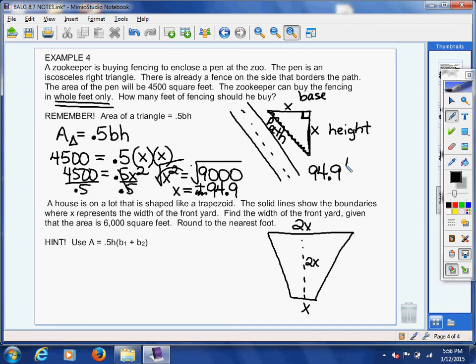We know that we're going to need 94.9 feet. That's what x is. And that's one side. But we need two sides occupied. So how do I handle that? What do I do with that 94.9?